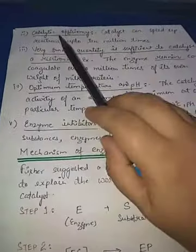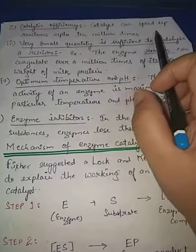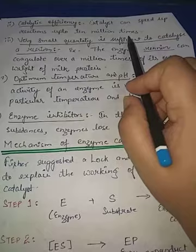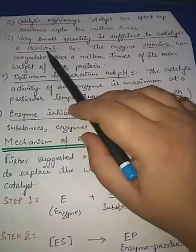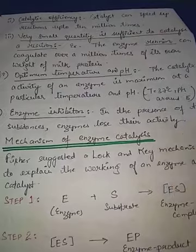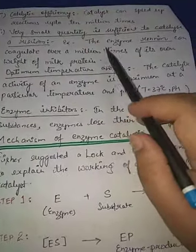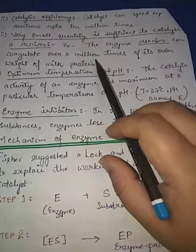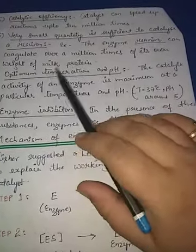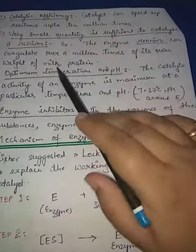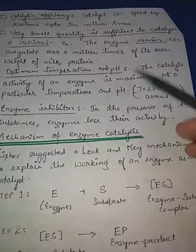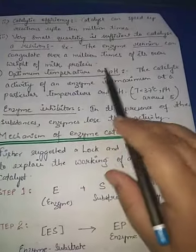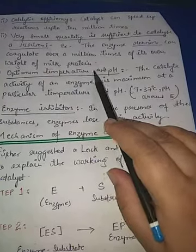Catalytic efficiency — enzymes can speed up reactions up to 10 million times, which is called catalytic efficiency. A very small quantity is sufficient to catalyze a reaction. For example, the enzyme rennin can coagulate over a million times its own weight of milk protein. Optimum temperature and pH: our body temperature is 37 degrees Celsius and a pH of around 5 is required for the proper functioning of enzymes.